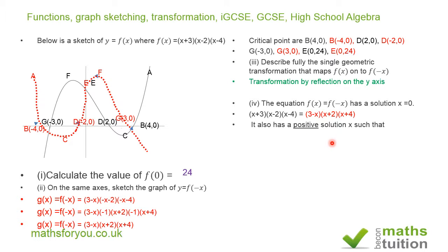It goes on to say it also has a positive solution x, such that x is greater than n and less than n plus 1, where n is a positive integer. Write down the value of n. We need to indicate on our graph the position where both graphs meet, and that's the solution. So both graphs meet there. That's the x value, that's the solution there.